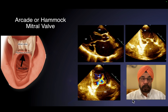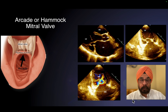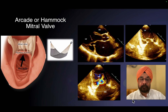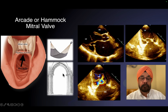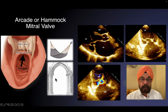This is very rare, but out of this rare category, the most common is what we call an arcade mitral valve or a hammock mitral valve. For a surgeon, it is a hammock because the surgeon is looking from the top, from the atrium — it looks like a hammock to him. From a cardiologist doing an echo, it looks like an arc. So both are the same thing: arcade mitral valve or hammock mitral valve.